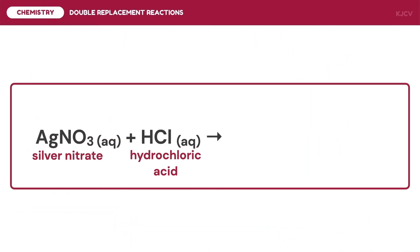For the first example, we have the reaction between silver nitrate and hydrochloric acid. The first step in determining the products of double replacement reactions is to determine the charges of the ions involved. For silver nitrate, silver is the positive ion and nitrate is the negative ion. For hydrochloric acid, hydrogen is the positive ion and chloride is the negative ion. The second step is to pair each charge to its opposite charge from the other compound.